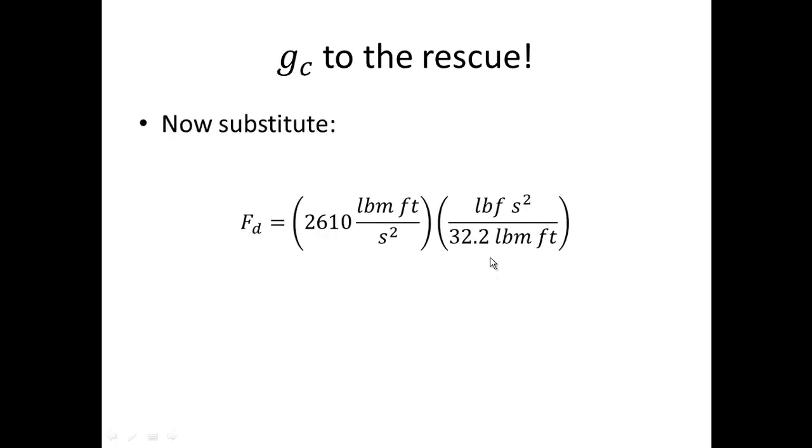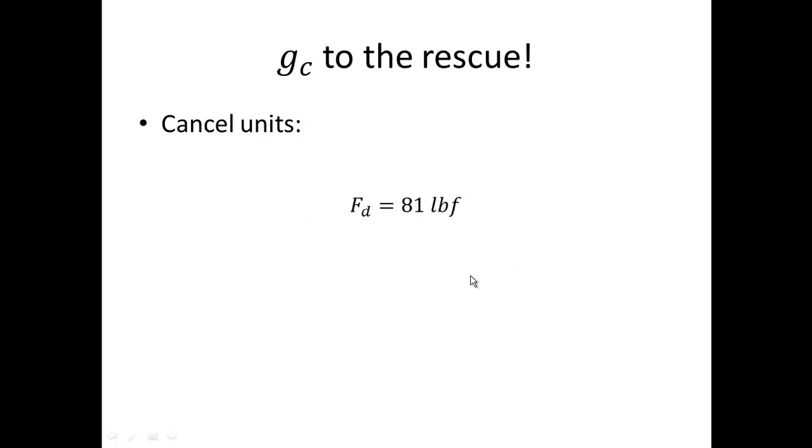Substituting, we start to cancel some units in our relation. We cancel the pound mass, we cancel the feet, treating the units just like as though they were variables. Then we cancel the second squared. That leaves us with pound force as the only unit left. And then we just carry out the 2610 divided by 32.2. We end up with, voila, 81 pound force.